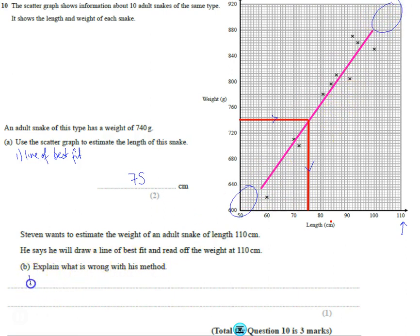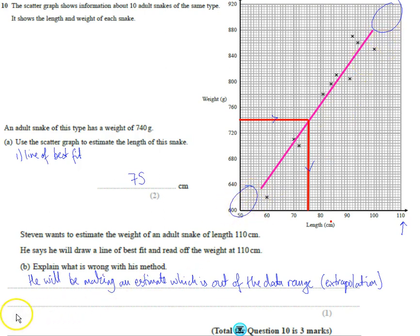So what's wrong with this method? This is called extrapolation. He's extrapolating and making an estimate which is out of the data range. It's not a good idea to do that. He should only make predictions from about 60 to about 100, or anything in between, not down here on the graph or up here.